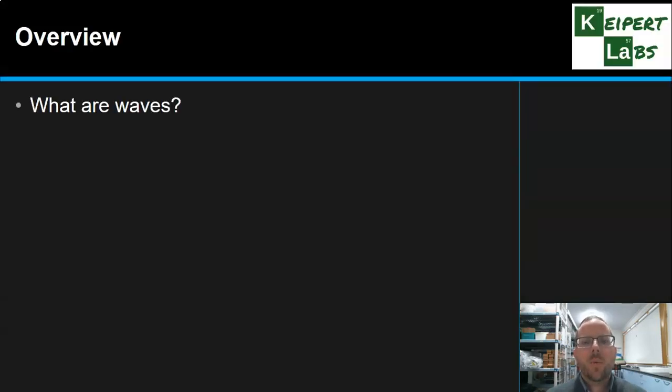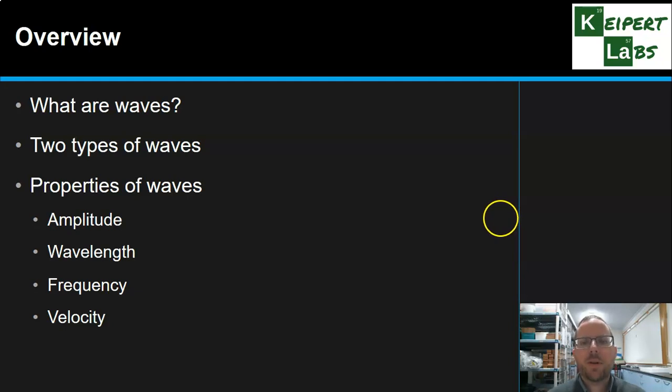We're going to start by looking at what are waves. We're going to look at the two main types or categories of waves. We're then going to look at four particular properties: amplitude, wavelength, frequency, and velocity.